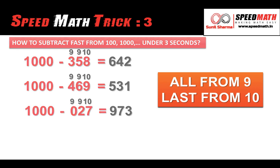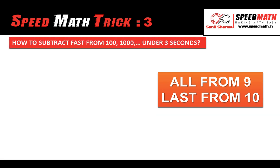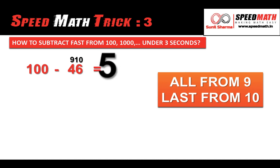Now let me take an example where we need to subtract from 100. Suppose we need to subtract 46 from 100. Rule number one: number of zeros should equal number of digits — and it is equal. All from 9 and last from 10: subtract 4 from 9 and 6 from 10. 9 minus 4 is 5, 10 minus 6 is 4. The answer is 54.